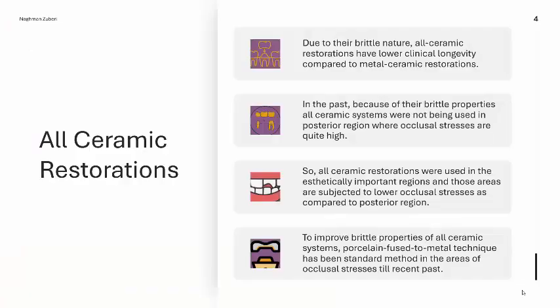Due to the brittle nature, all-ceramic restorations have lower clinical longevity compared to metal-ceramic restorations. In the past, because of their brittle properties, all-ceramic systems were not being used in the posterior region, as they were not able to withstand high occlusal stresses. They were used in aesthetically important regions subjected to lower occlusal stresses. To improve brittle properties, porcelain fused to metal was the standard method for high-stress areas.